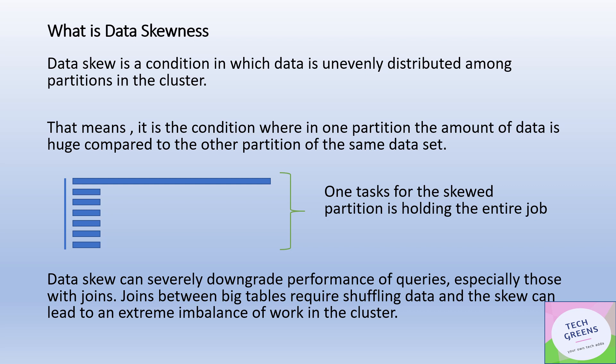Data skewness, in simple terms, is a condition where the data is unevenly distributed among the different partitions across the cluster. This means one partition has a very large amount of data compared to the other partitions of the same dataset — the data records in that one partition are vastly greater than in the others.